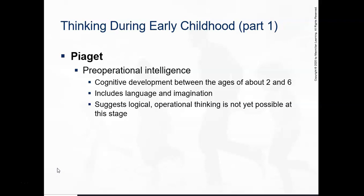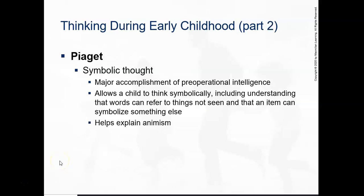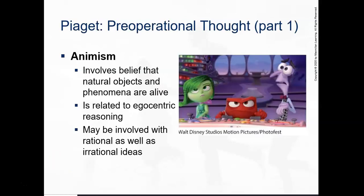This is the pre-operational intelligence stage. When we talk about our theorist Piaget, I want to highlight a few things like language and imagination. This is where children have playtime and learn the rules of the playground, how to interact with others. The imagination, imaginary friends, playing with dolls and toys — this is where all of that takes place. I'll leave this for your reading as you go through.